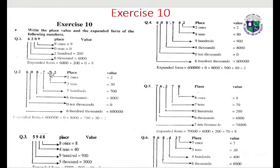Place values: 1, 10, 100, 1,000, 10,000. 600,000. 60,000. 8,732.